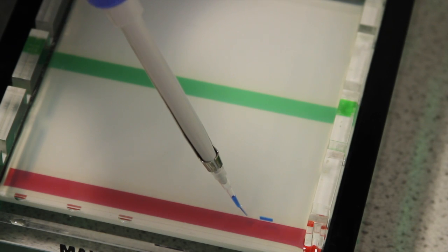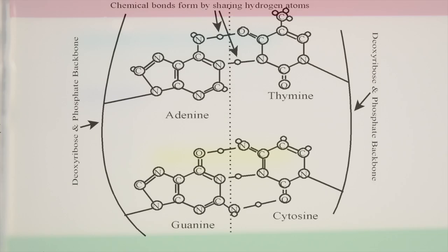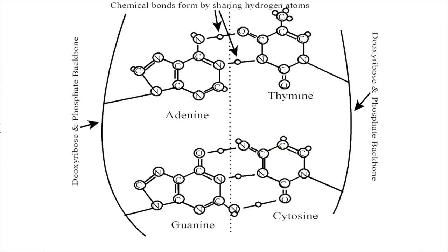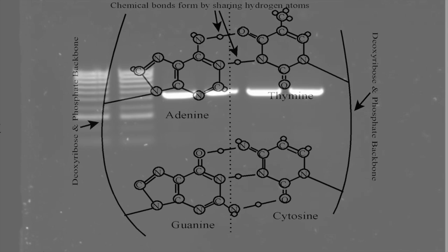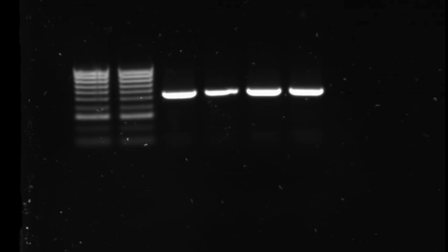A DNA sample is loaded into a well of the gel and when a current is applied the DNA will migrate through the gel towards the positive electrode since the phosphate groups of the DNA structure give it an overall negative charge.